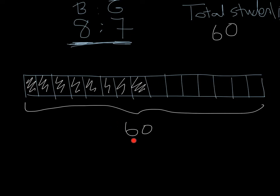Can we find out what each of these little boxes are? If we know that 15 of these boxes here give us 60 students. Yes, we can. We can say 60 divided by 15. And that equals 4. So we know each of these sections is going to be 4 students.